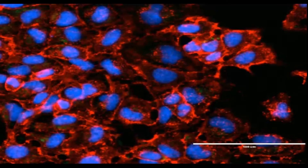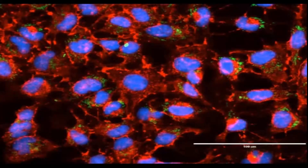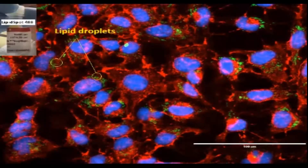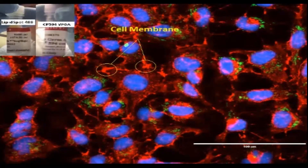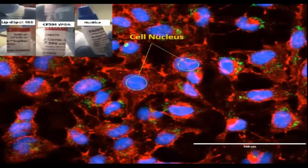Notice how beautiful this image is. And here is an image of cells that have not been stained. This video describes the protocol for the Lipid Spot 488 Lipid Droplet Stain, which stains lipid droplets green, the CF594 WGA which will stain the membrane red, and the Nuc-Blue Live Cell Stain, which stains the nucleus blue.